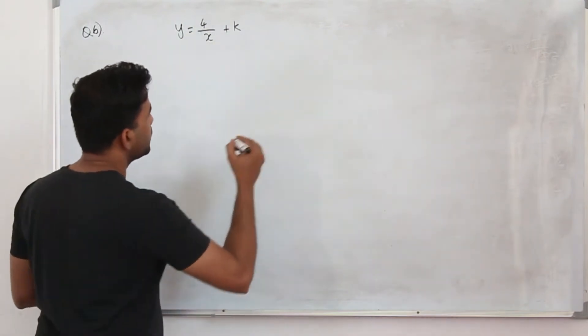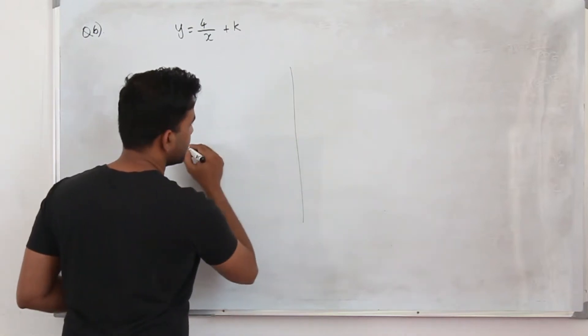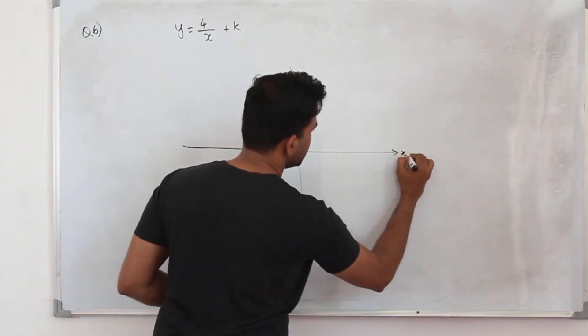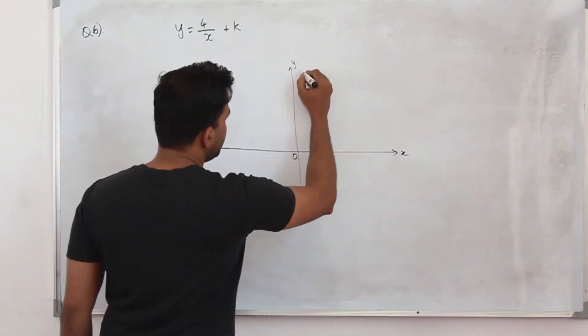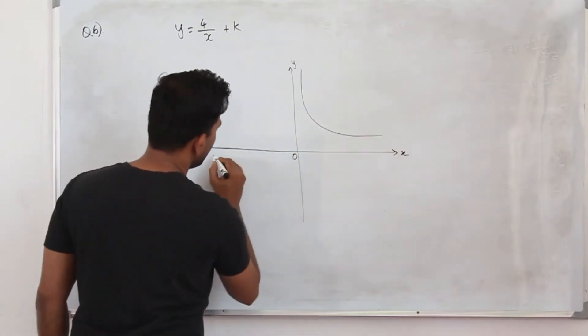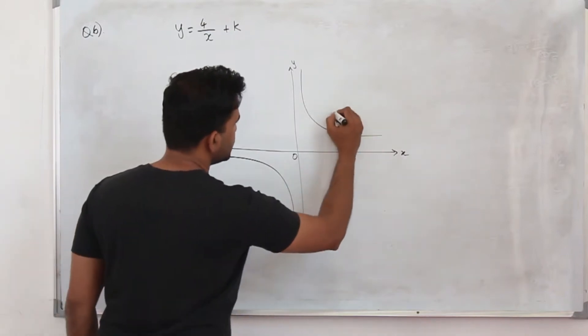It's a reciprocal graph. So I'm going to start with the basic reciprocal graph 1 upon x. X and y plane. This will be our reciprocal graph 1 upon x.